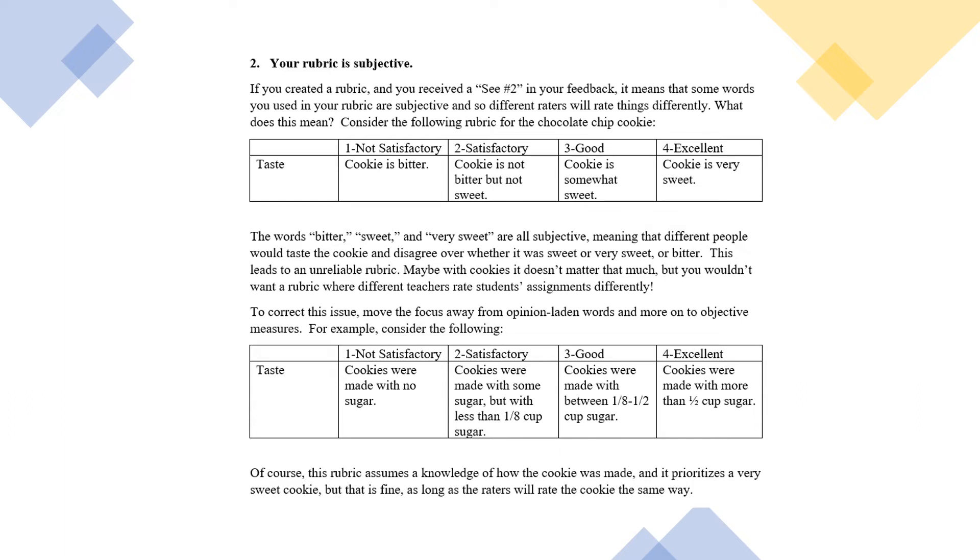One, cookie is bitter. Two, cookie is not bitter but not sweet. Three, cookie is somewhat sweet. Four, cookie is very sweet. I might taste a cookie and you might taste a cookie and we would disagree on whether it's bitter or sweet. That is because you're choosing a subjective criterion.